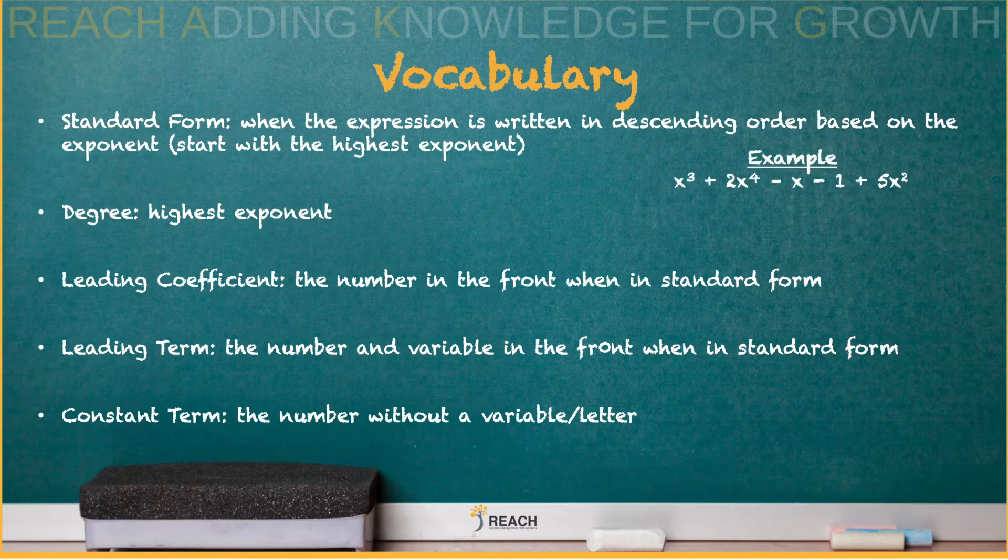So we have a polynomial function right here: X to the third plus 2X to the fourth minus X minus one plus 5X squared. Now I want to put it in standard form. So you're going to look and say, okay hey, what's the highest exponent I see? I see a 3, a 4, a 1, a constant, and then a 2 as far as the exponent in order reading from left to right.